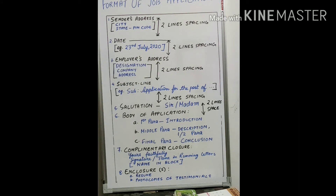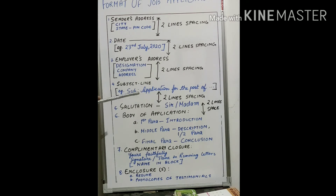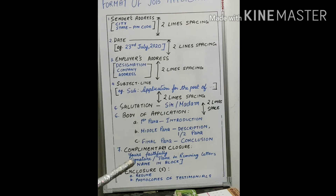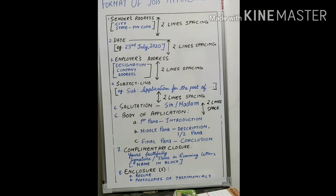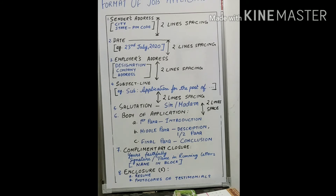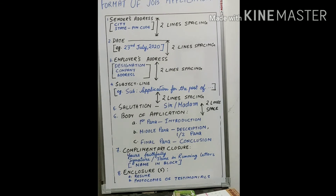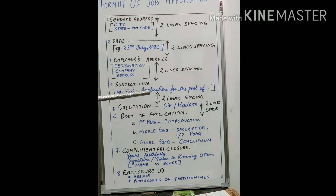Coming to the fourth element — the subject line. Any letter, be it an editorial letter or a job application letter, must have a subject line stating what topic you are going to deal with. The right way to write it: don't write long things — simply refer to it as 'Application for the post of [post name].' Sometimes an advertisement number or reference number is given when advertisements are published in a newspaper, and in that case you have to mention it in the subject line.